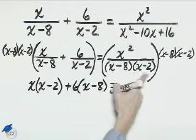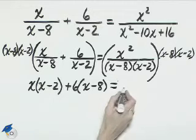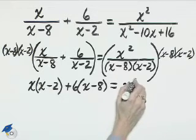On the right, the denominator divides away these common factors, the x minus 8, x minus 2, and so we just have x squared.